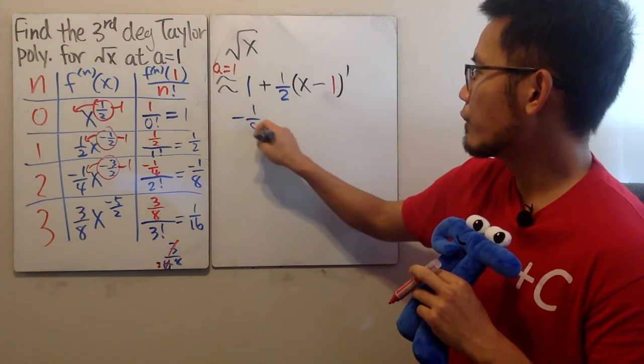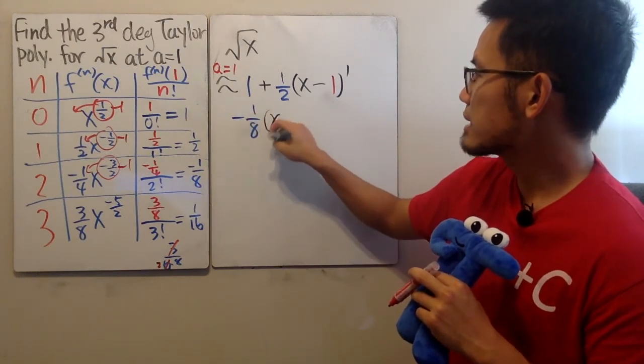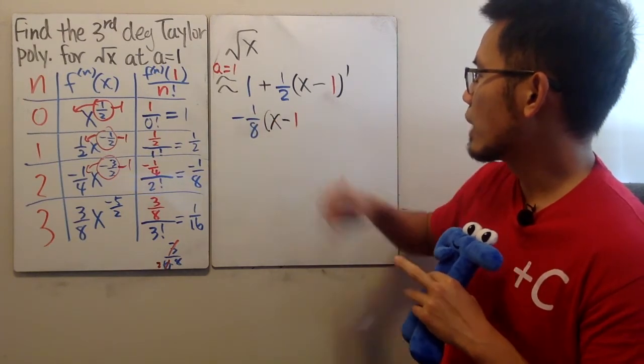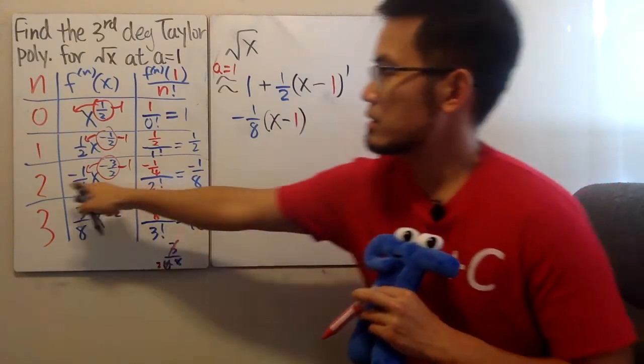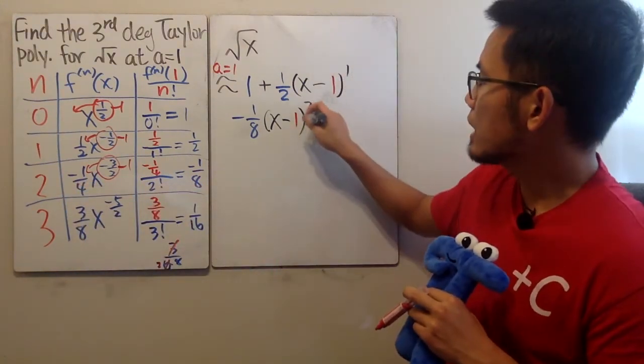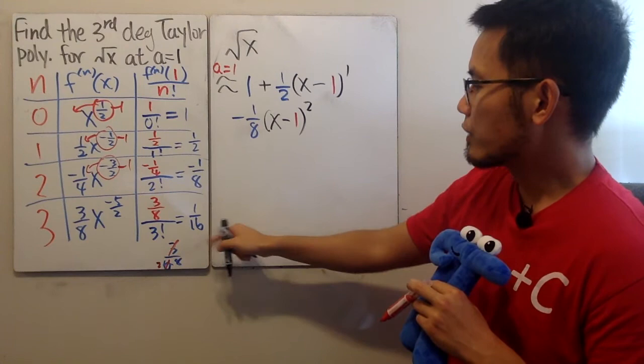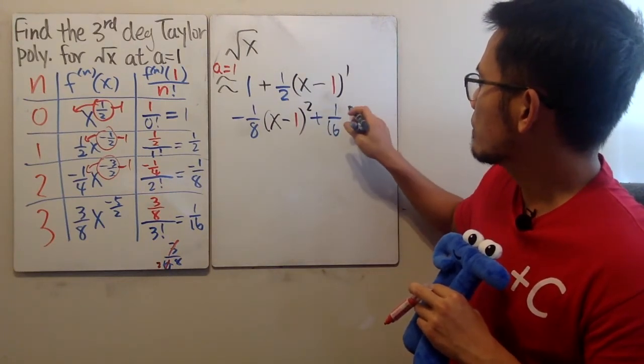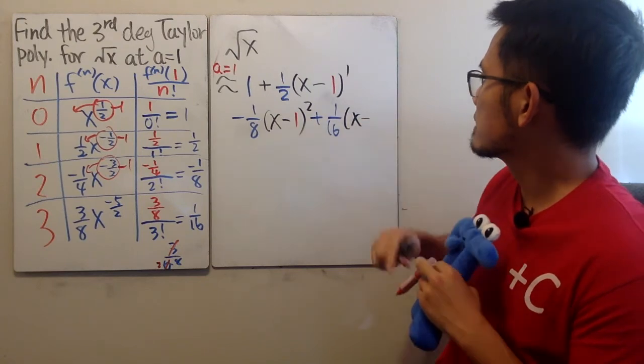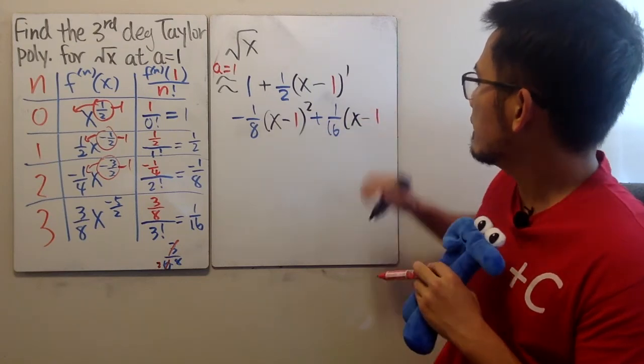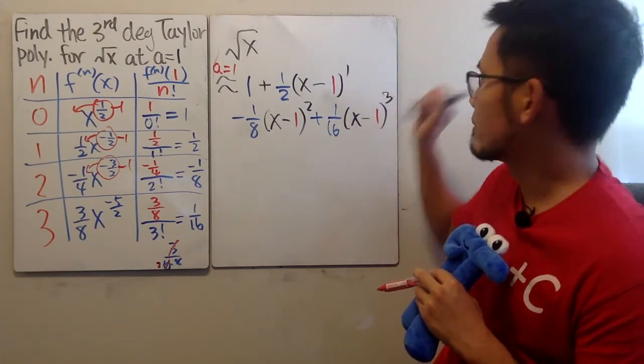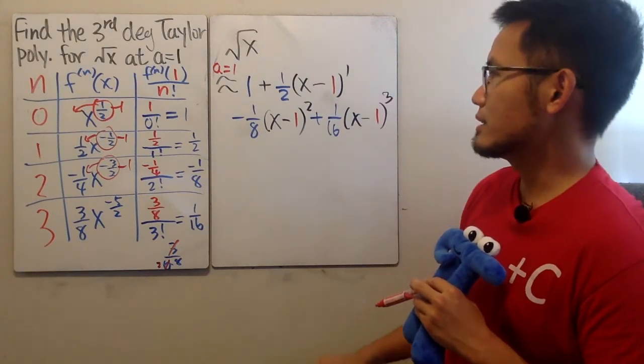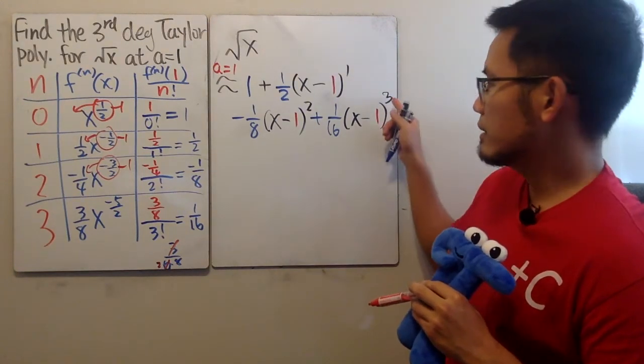Next, we have the negative 1 over 8 times x minus, again, the a, which is 1. And then here is to the second power. Lastly, we have 1 over 16. So we add 1 over 16. And we multiply by x minus 1. And then raise to the third power.